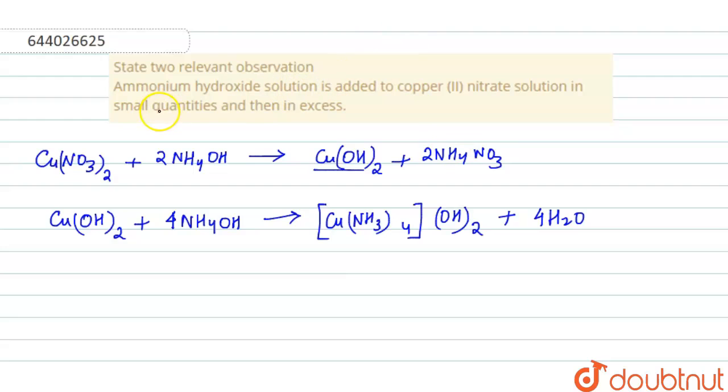observed when small quantity of NH4OH is added to copper nitrate solution. We get a pale blue precipitate of Cu(OH)2, or copper hydroxide. This is your observation one.